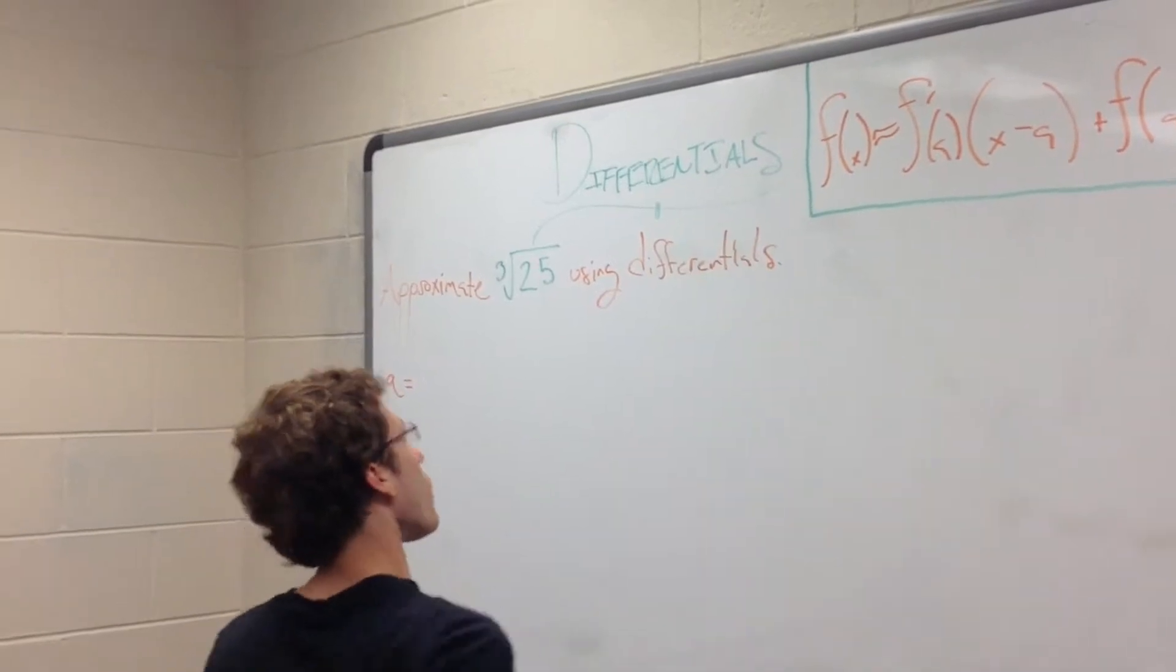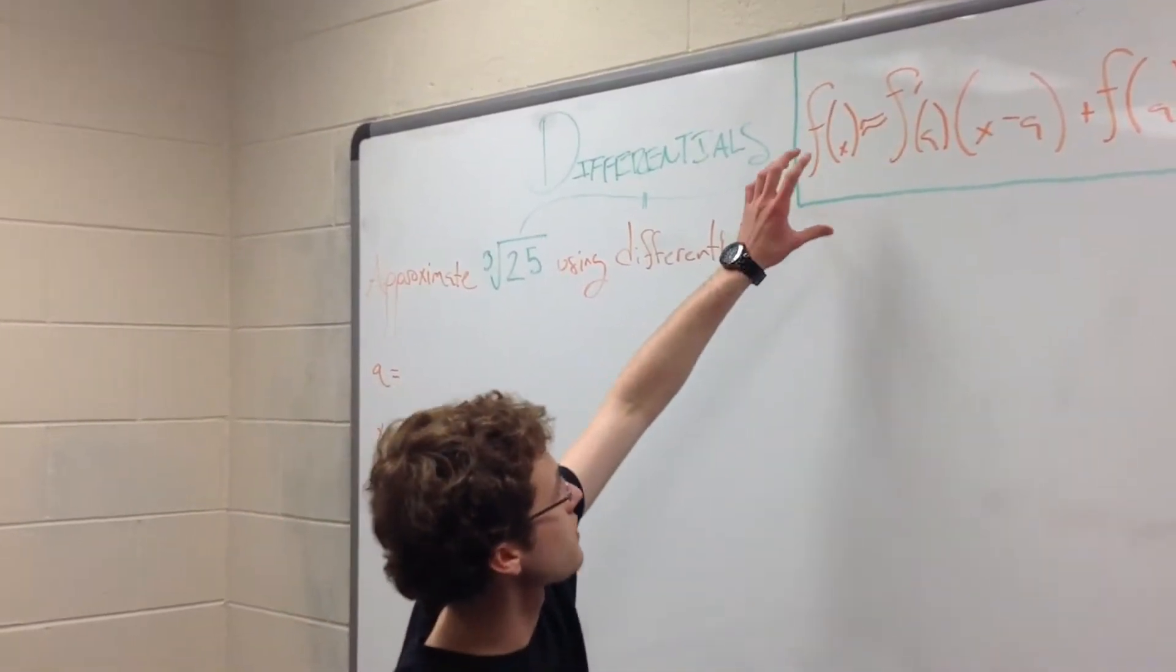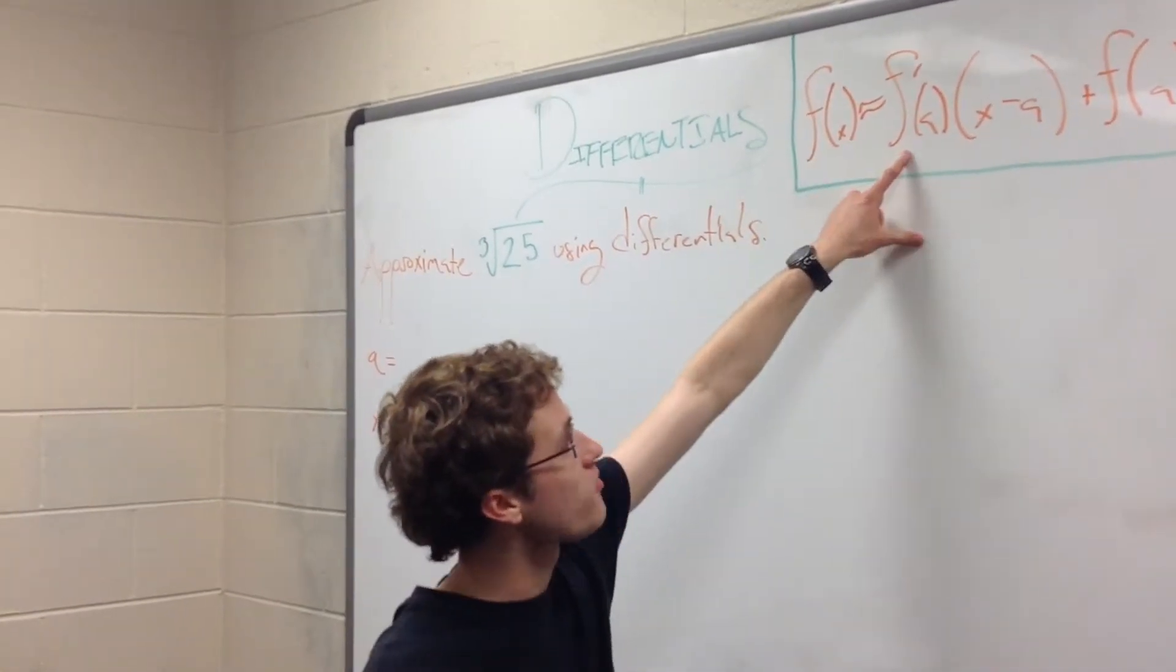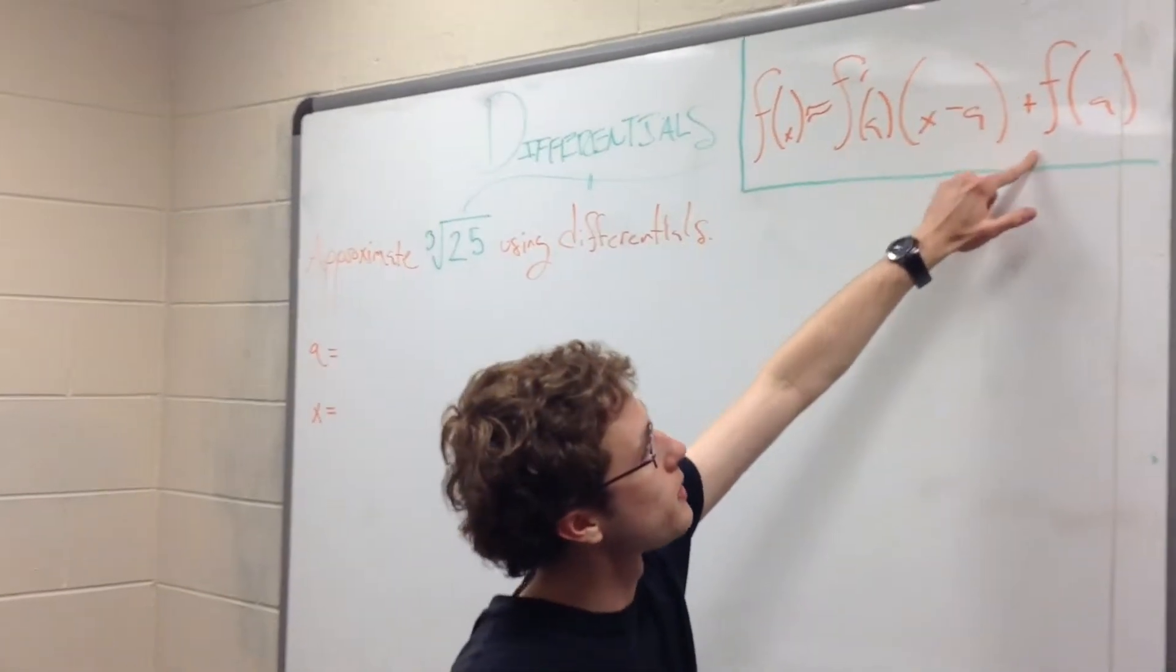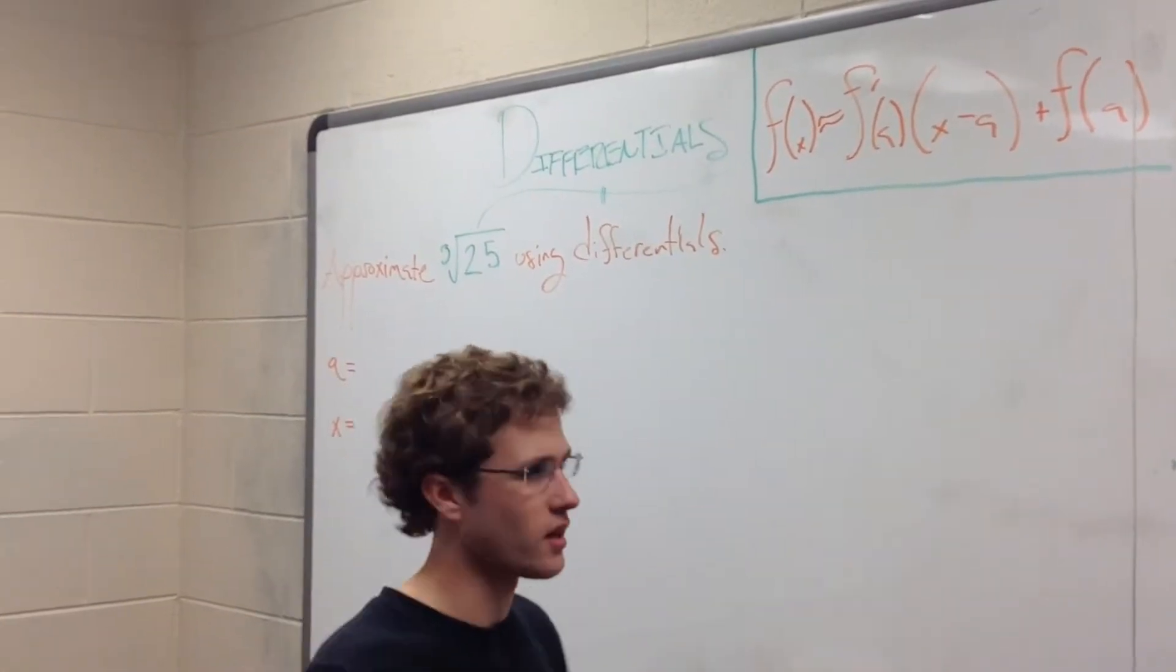So here is the equation that we use to approximate things using differentials. It is that f of x is approximately equal to f prime of a, x minus a, plus f of a. Now okay, where do we get all that from?